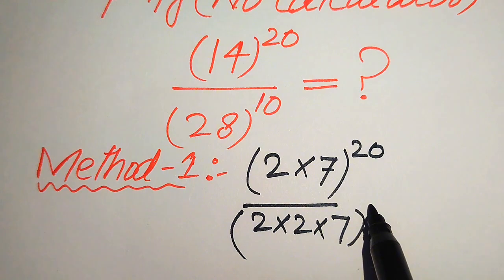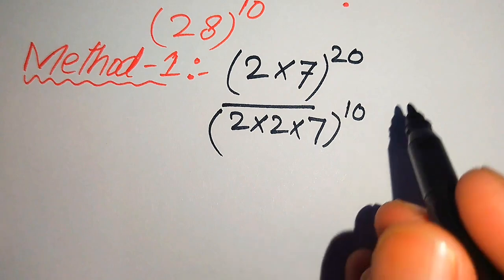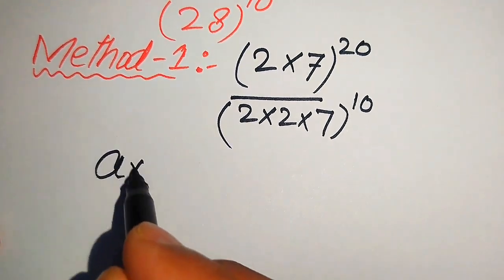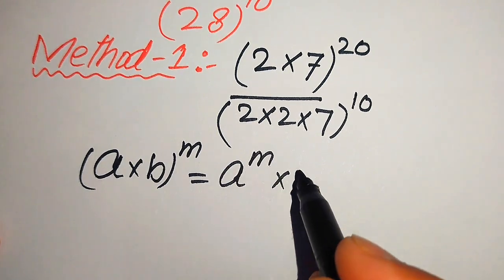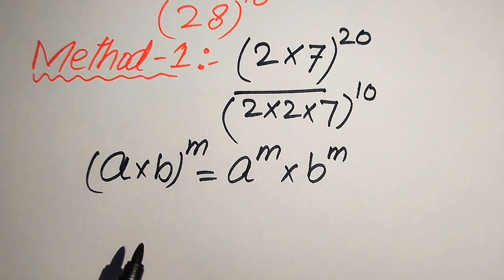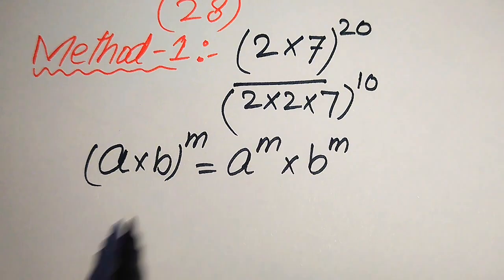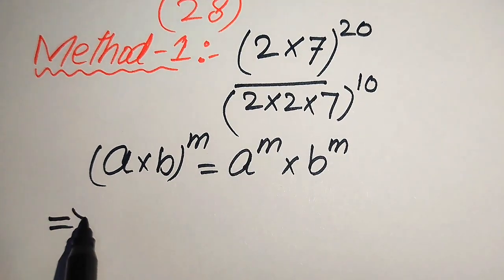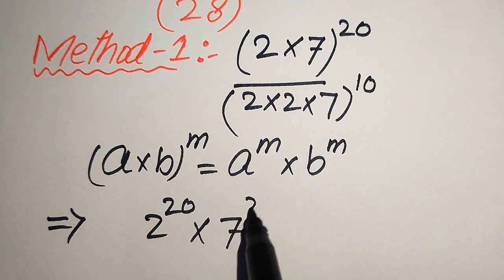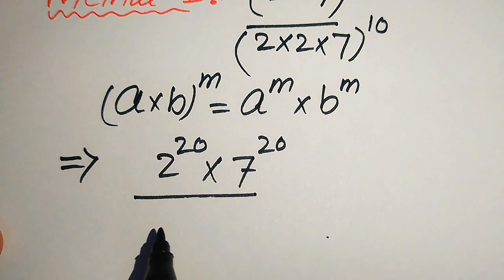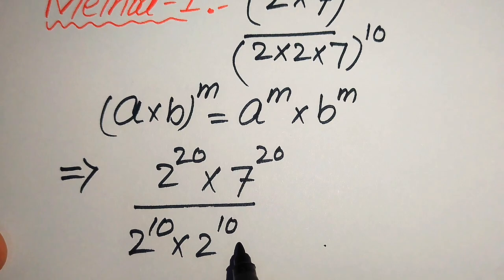Now we apply the exponent law: (a × b)^m = a^m × b^m. According to this rule, we break the exponents onto each base separately. The numerator becomes 2^20 × 7^20, and the denominator becomes 2^10 × 2^10 × 7^10.